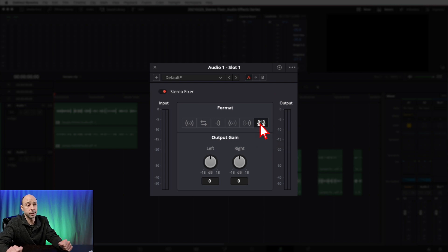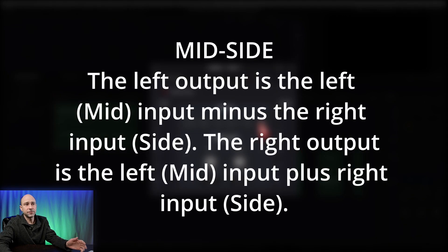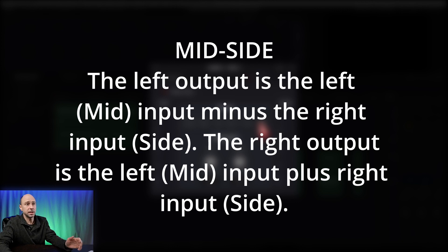The last icon is Mid-Side Input — I'll be honest, this one is a bit confusing. From the manual: the left output is the left mid input minus the right input side, and the right output is the left mid input plus the right input side. You're probably not going to need that one. In my experience using this effect I haven't needed it, so if none of the other options are working, maybe give it a try, but it sounds like gibberish to me.